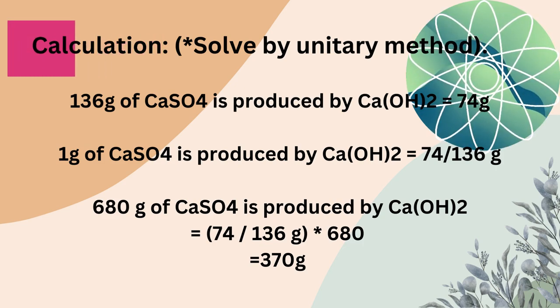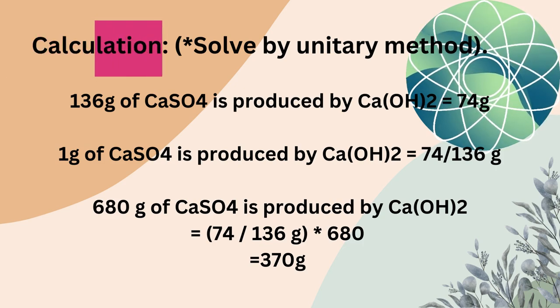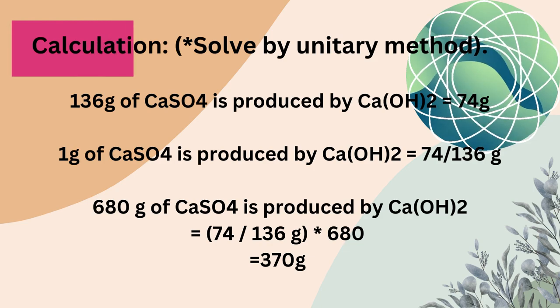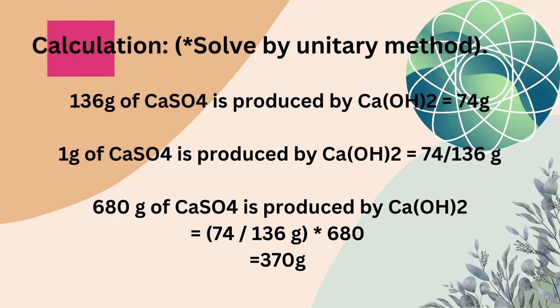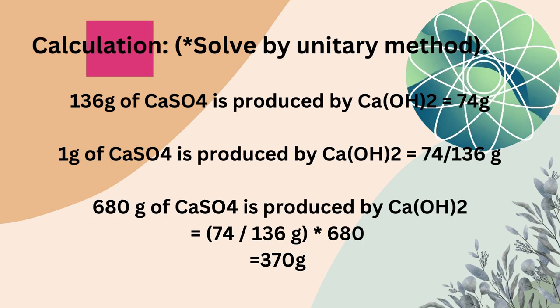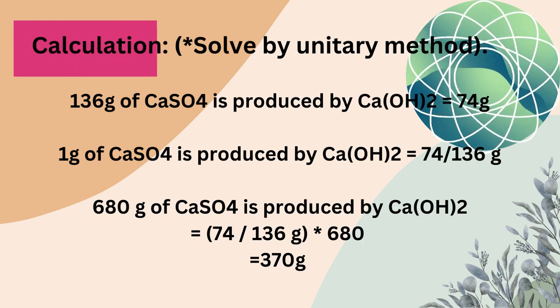Calculation: 136 grams of calcium sulfate is produced by calcium hydroxide equals 74 grams. 1 gram of calcium sulfate is produced by calcium hydroxide equals 74 divided by 136 grams.